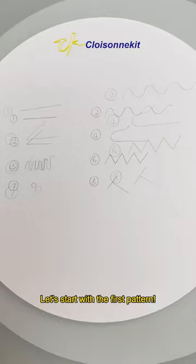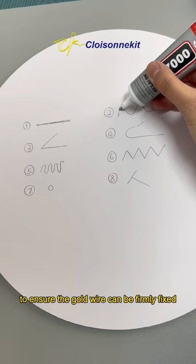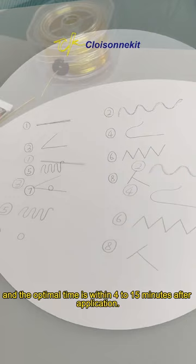In the first step, apply glue to the patterned lines. The glue can be slightly wider than the lines. To ensure the gold wire can be firmly fixed, wait for 5 minutes for the glue to become tacky. The glue used is slow drying and the optimal time is within 4 to 15 minutes after application.